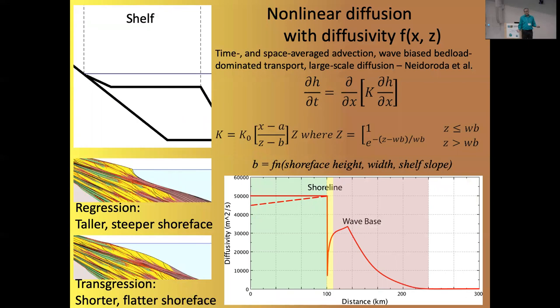Offshore, it's this non-linear diffusion that Alan Niedoroda advised, where basically diffusivity is a function of both distance and water depth, with some small terms that are added in to help keep things from blowing up near the shelf edge. And then I've added in an exponential decrease in the diffusivity below a wave base. One of the nice things about this essentially makes a dynamic diffusivity that varies as you prograde and regress.